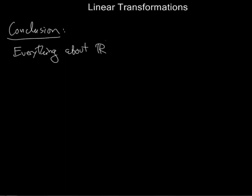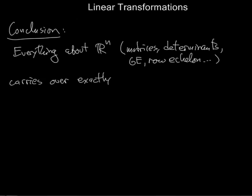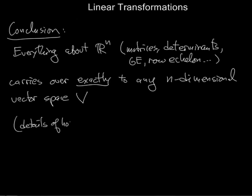So I'm just going to say, sort of vaguely, the conclusion of all of this, but this is quite important. Everything we've been talking about R^n, matrices, determinants, Gaussian elimination, row echelon form, and everything we're going to be talking about in the rest of the semester carries over entirely to the setting of an abstract vector space, to any n-dimensional vector space. And the only caveat is that the details of how that happens depends on the choice of basis. But the sort of big picture, how everything works, is exactly the same. And we're going to be talking quite a bit more about this as we go through the rest of the course. And this is kind of an introduction to all of that.